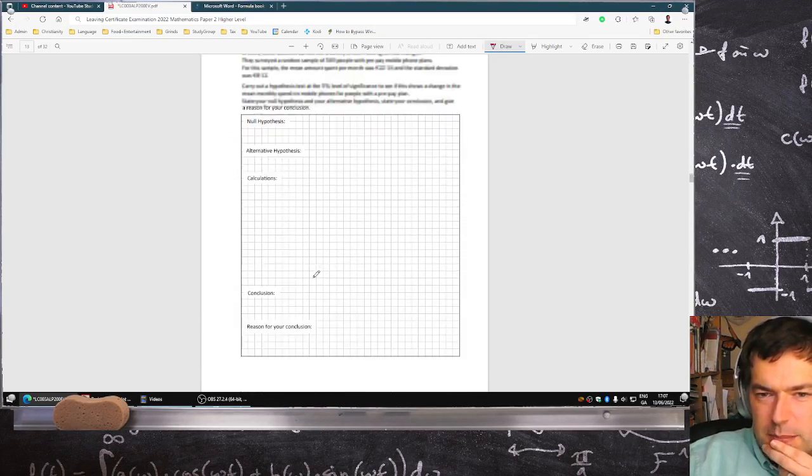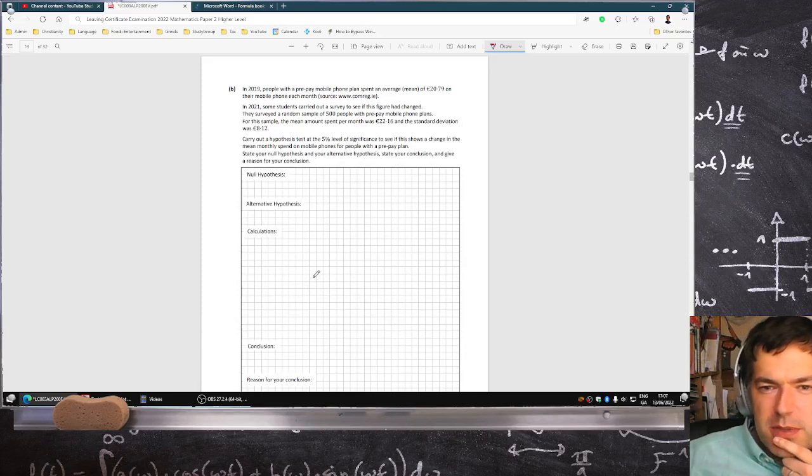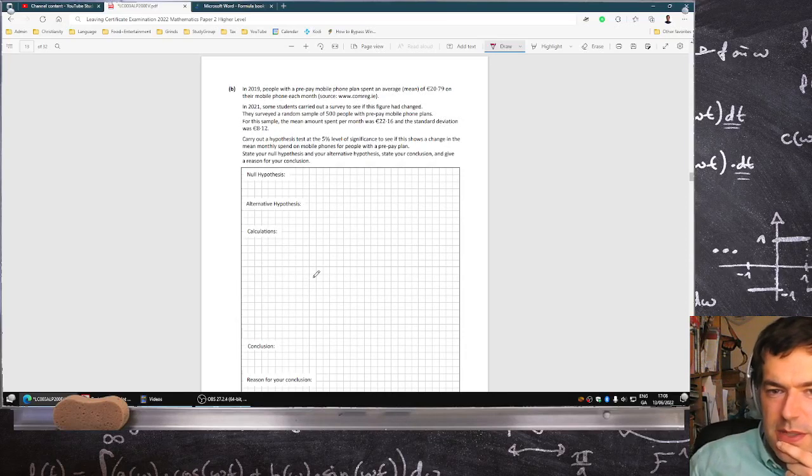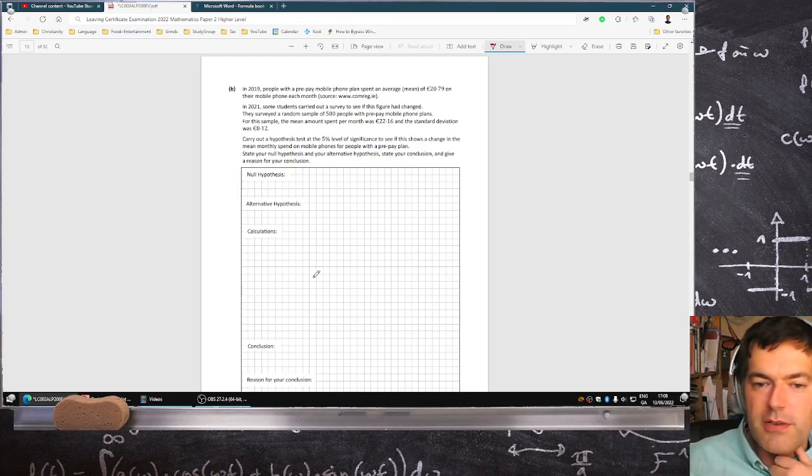And now a hypothesis test. In 2019, people with prepaid mobile phone plans spent on average 20.79 euros. In 2021, some students carried out a survey to see if this figure had changed. A survey of 500 people got 22.16 with a standard deviation of 8.12. Carry out a 5% level test to see if it shows a change in the amount of spending.